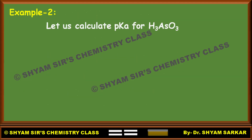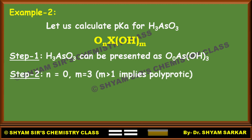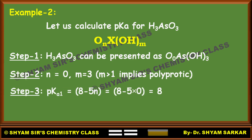Next example: H₃AsO₃. Step 1: H₃AsO₃ can be represented as O⁰As(OH)₃. Step 2: N equals 0 and M equals 3 — this is also a polyprotic acid. Step 3: pKa1 = 8 minus 5 times 0, which equals 8. Successively adding 5, pKa2 will be 13 and pKa3 will be 18. This is also very simple.